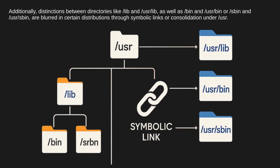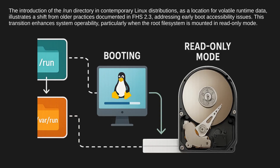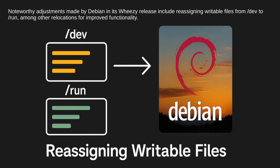Additionally, distinctions between directories like /lib and /usr/lib, as well as /bin and /usr/bin, or /sbin and /usr/sbin, are blurred in certain distributions through symbolic links or consolidation under /usr. The introduction of the /run directory in contemporary Linux distributions as a location for volatile runtime data illustrates a shift from older practices documented in FHS 2.3, addressing early boot accessibility issues. This transition enhances system operability, particularly when the root file system is mounted in read-only mode. Noteworthy adjustments made by Debian in its Wheezy release include reassigning writable files from /dev to /run, among other relocations for improved functionality.